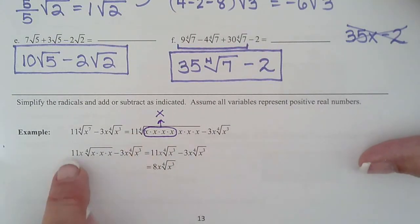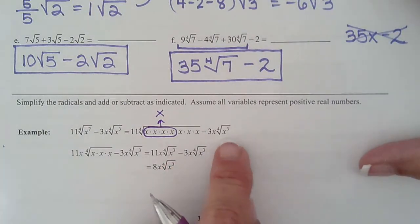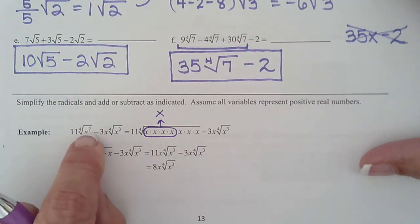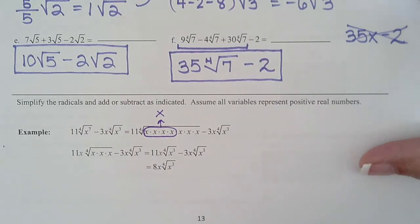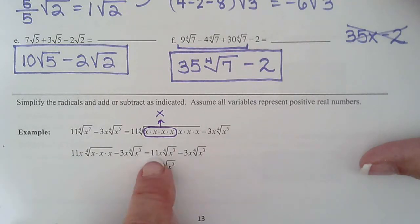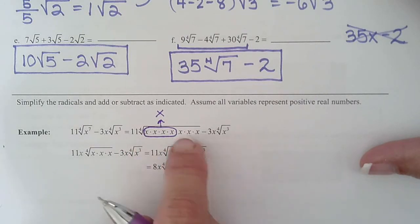Okay. So that term is going to turn into 11. Bring the x out. And fourth root of, there's one, two, three x's inside, x cubed. This one is already simplified. And how we know it's simplified is the exponent is smaller than the index. When the exponent is larger than the index, that tells you it needs to be simplified. But there's only three x's. That's not enough to get out of jail. So we write the first term in its new form. 11x, fourth root, and then there's three x's underneath, minus 3x, fourth root x cubed.